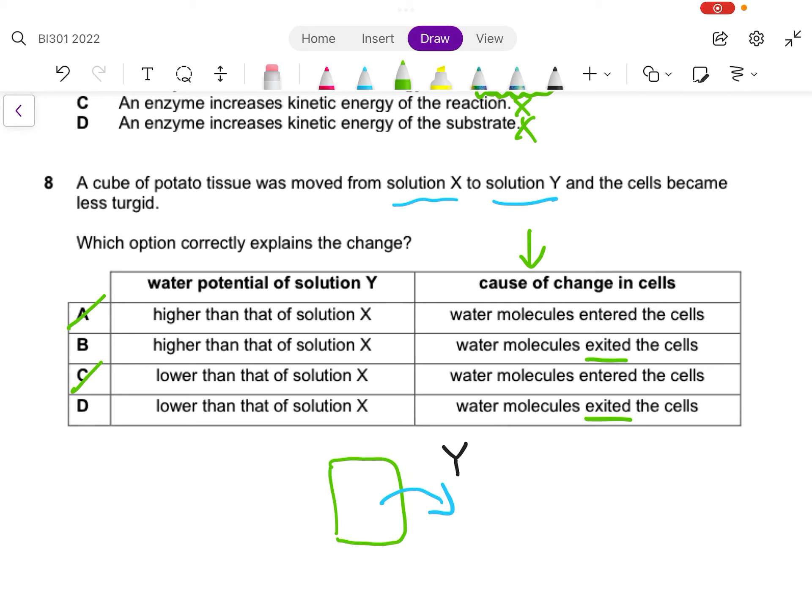For B and D, now let's figure out the water potential. If water leaves the cell, it means that water was moving from an area of high water potential to an area of low water potential. So the answer will have to be D. The water potential of solution Y is lower than that of the water potential of solution X. That explains the direction of movement of water. Therefore D is the answer.